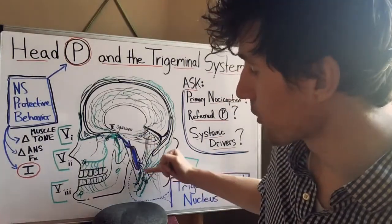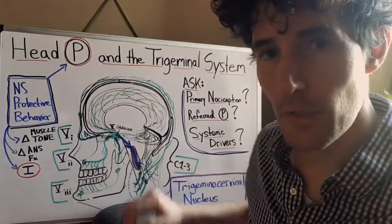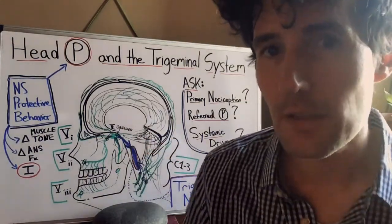So this is the first place in the central nervous system that receives the incoming signal from the trigeminal nerve and the upper cervical nerves. And this is the first place where there's a real regulatory lever.